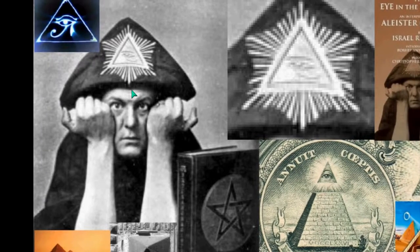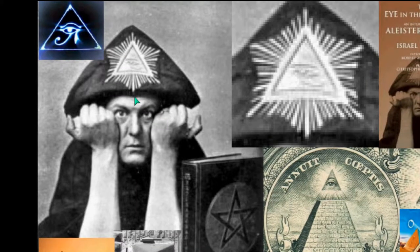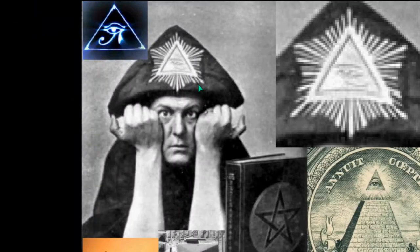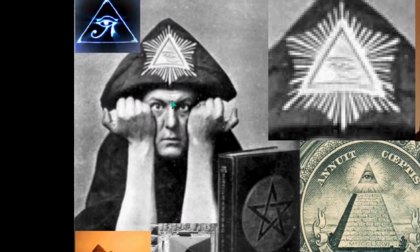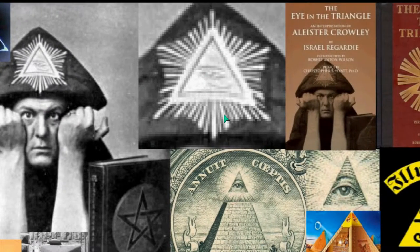We begin with the most famous Satanist on the planet — he's now dead. This is Aleister Crowley, and we see that he has a triangle with an eye in it. This is the Egyptian-style eye, and it has illumination around it. This is the Eye of Horus, and so this is a Satanist wearing the Eye of Horus.